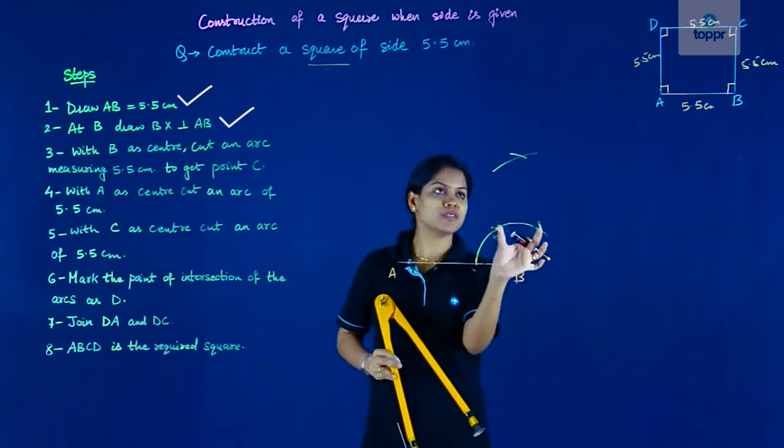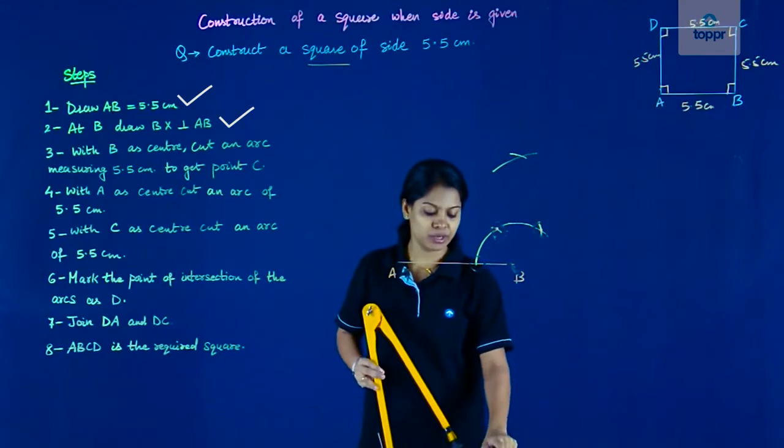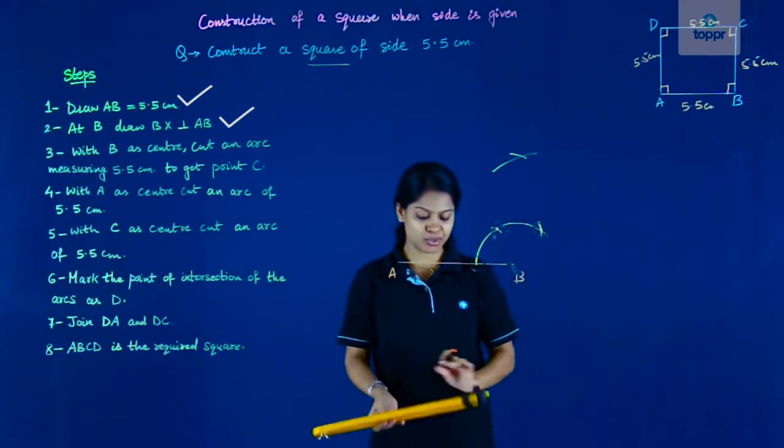So now I have 60 plus half of 60, that is 30. So complete 90 degrees is ready now.